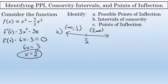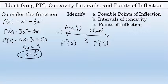I'm going to pick a value in each interval. In the interval from negative infinity to 1 half, I'll choose 0, and in the interval from 1 half to infinity, I'll choose positive 1. I'm going to evaluate those values in the second derivative. If it is positive, every point in that interval is concave up, and if it's negative, every point in that interval is concave down.